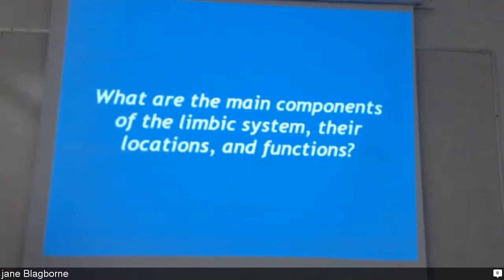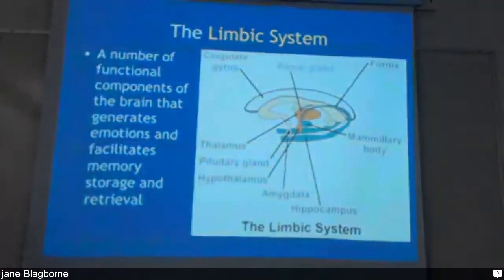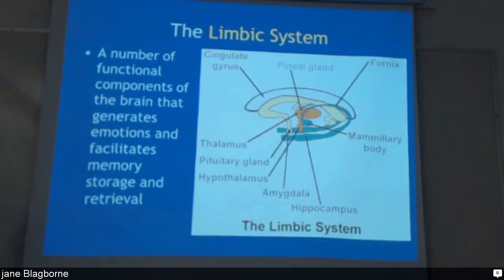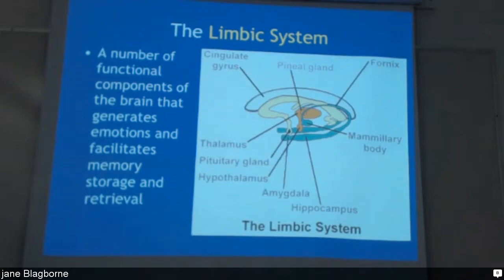The limbic system is involved in emotion, memory storage, and resources. If you have a really good limbic system you're probably good at school, and if you have a strong limbic system you're emotionally stable. It's a very important system.